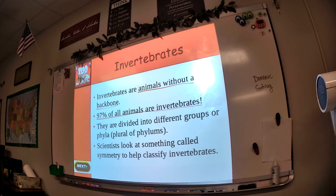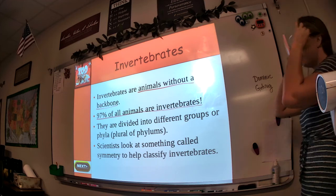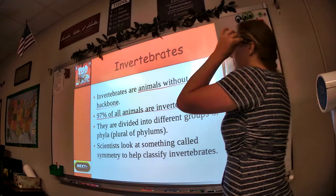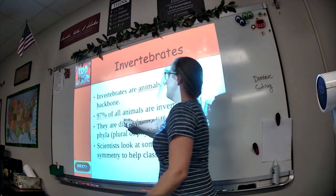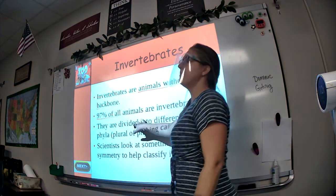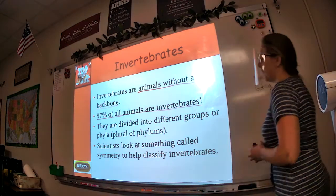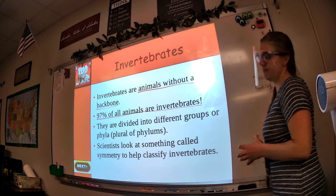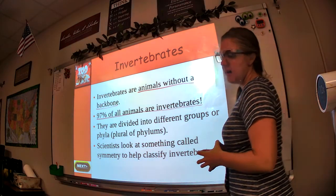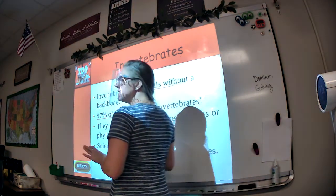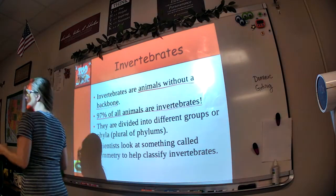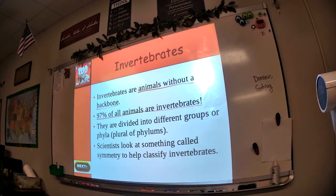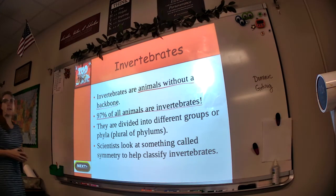Okay, so the top, for definition of invertebrate: animals without a backbone. And then 97% of all animals are invertebrate. Like I said, this slide's a little bit different than what you have on the note, so just listen to me. Those are what you write for definition.